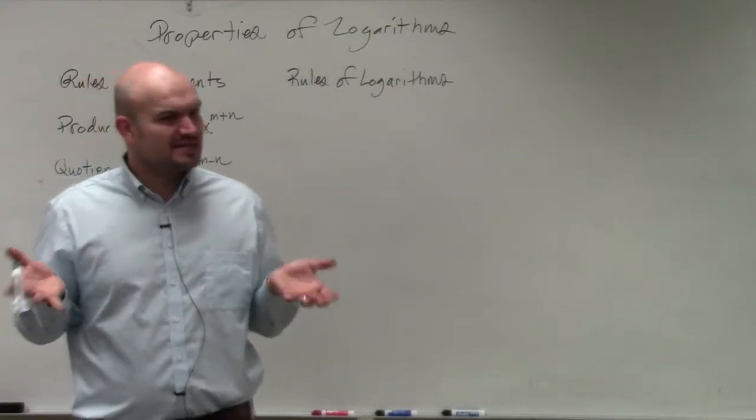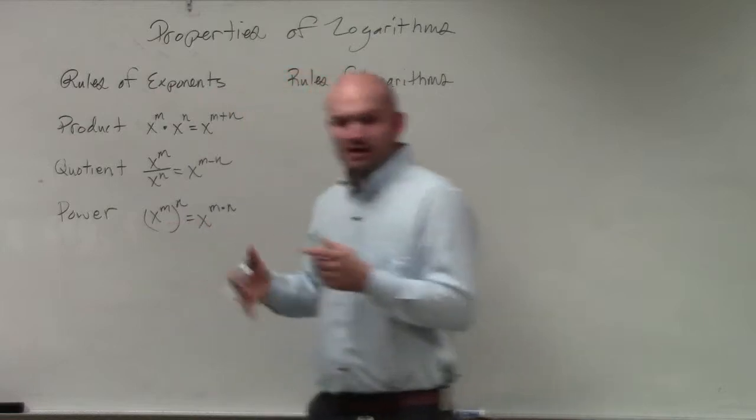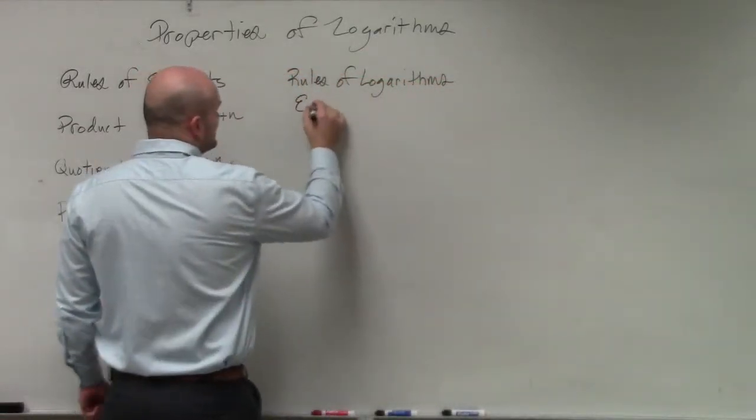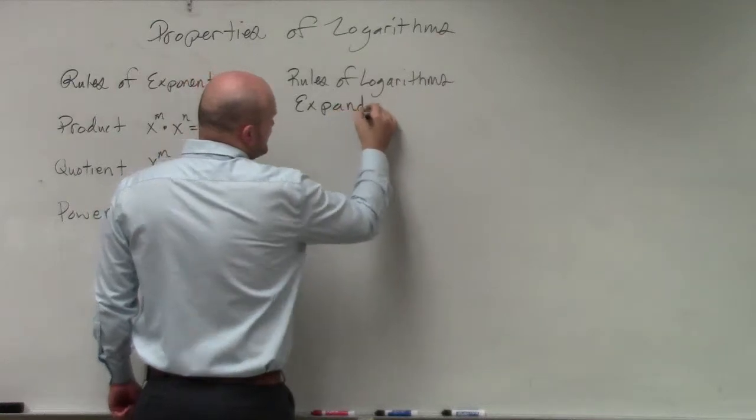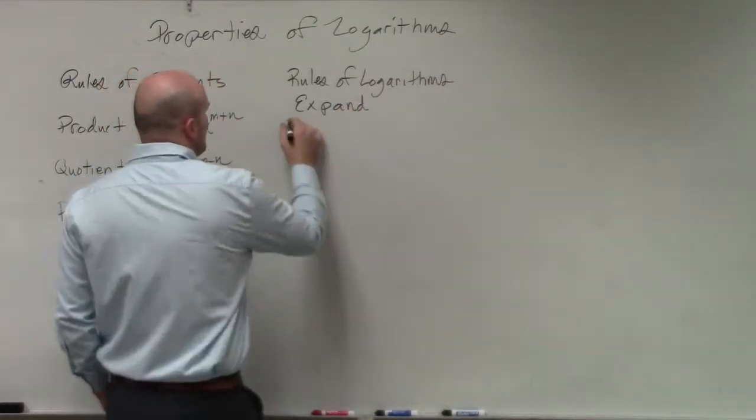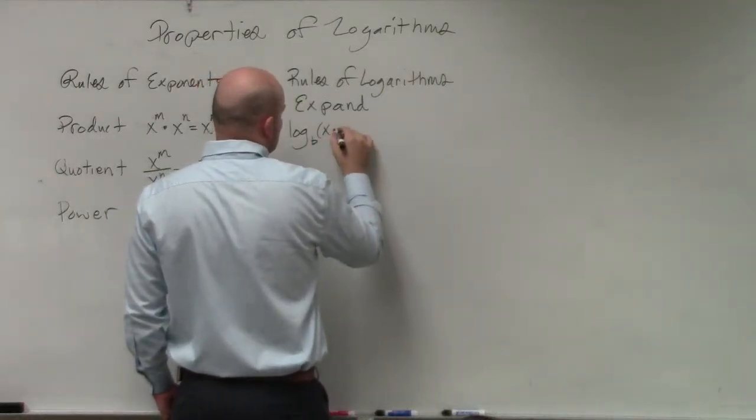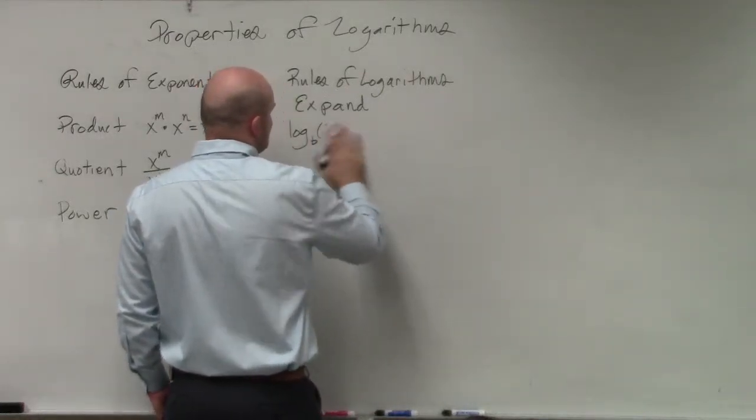For some reason, I get a lot of students that have trouble with this when I only write the properties in one manner. So what I'm going to do is write them twice. Here's how they look when we're looking for expanding. So if I have the logarithm of base b times—let's do m times n.